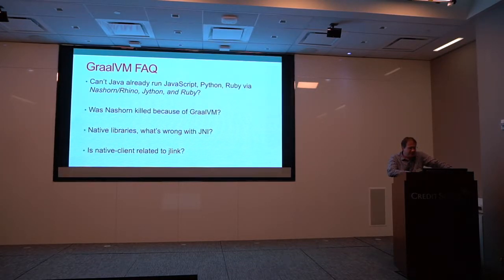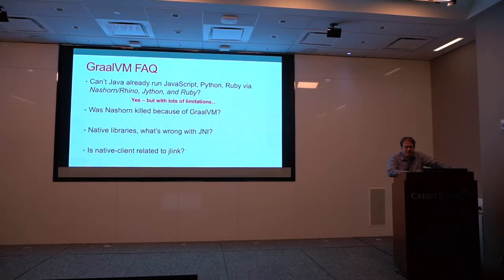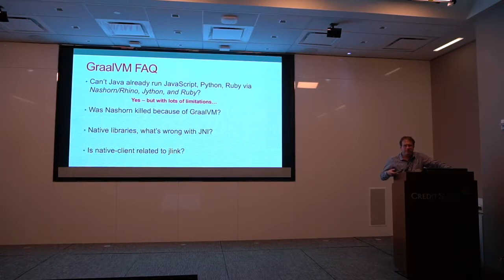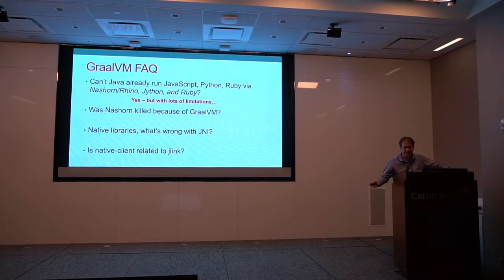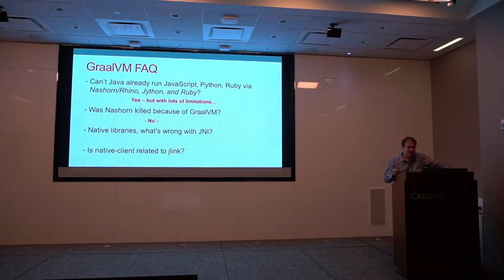Some FAQ questions with GraalVM. Can Java already run JavaScript, Python, Ruby — like Jython and JRuby? Yes, but with lots of limitations. With GraalVM, you get all the native extensions — you get access to the actual Python libraries and Node libraries. Jython just allows you to write Python code on the JVM without giving you access to third-party libraries. Was Nashorn killed because of GraalVM? No — it was for architectural reasons, and as soon as JavaScript began evolving quickly, the writing was on the wall.